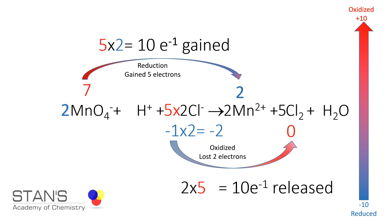What remains is balancing the oxygen in permanganate ion. There are two moles of permanganate ion with four oxygens each, making eight oxygens total. To have eight oxygens in the product, we put a coefficient of eight in front of water. Since the reaction is in acidic medium, we balance hydrogen ions: eight water molecules give 16 hydrogen atoms on the product side, so we put a coefficient of 16 in front of H⁺ on the reactant side.